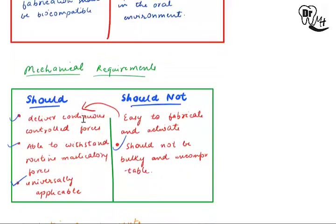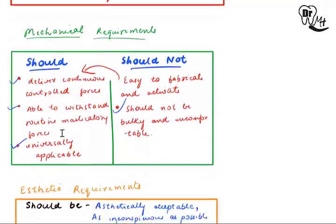The mechanical requirements are that they should deliver continuous controlled forces. We need continuous controlled forces because if a large amount of force is applied in a short amount of time — for example, like a punch to the teeth — it will either harm or fracture them. Continuous controlled forces allow time for bone remodeling and for the tooth to move slowly from its position. Treatment cannot be completed in a very short amount of time.